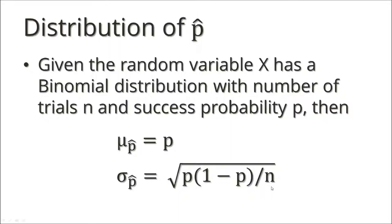Notice that as n increases, as our sample size increases, the standard deviation goes to zero, which means that mu sub p-hat is going to become a more and more precise estimate for p. So the standard deviation of p-hat is the square root of p times one minus p over n, and the expected value of p-hat is p.